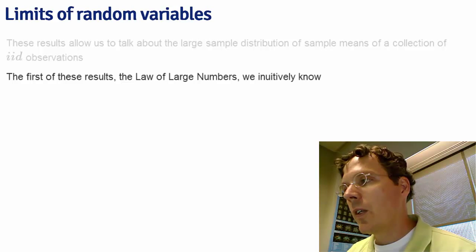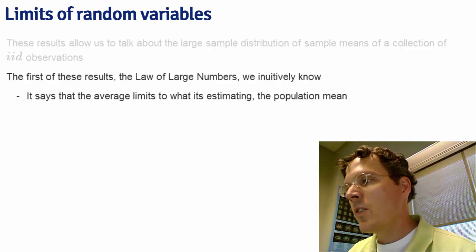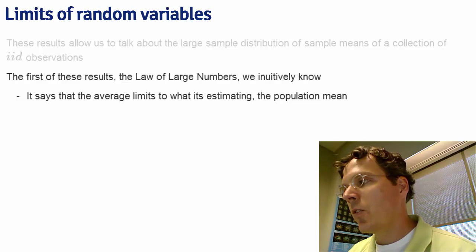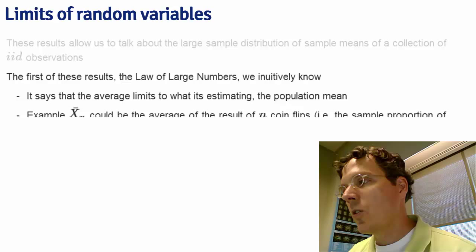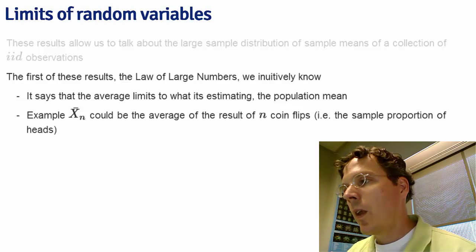The first of these we already intuitively know, the so-called law of large numbers. It says that the average limits to what it's estimating, the population mean. For example, the average could be the result of n coin flips, the sample proportion of heads.